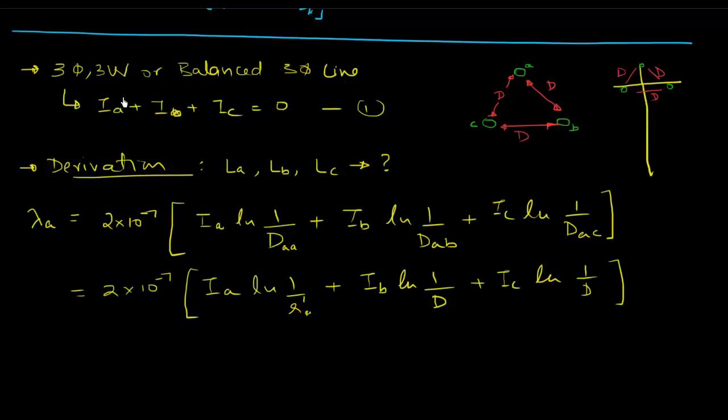Now I said we'll use this identity. So from here what this implies is that Ib plus Ic is nothing but negative Ia, and I'm going to use that identity here. So getting to the next step, we have 2 into 10 to the power minus 7, Ia ln of 1 over - I'm going to write this as Ds, so that's basically the self distance in a way, and that just makes everything look a little bit more symmetrical because we'll get d in the denominator as well. Now so this becomes Ib plus Ic times ln 1 over d.